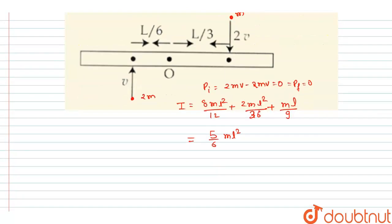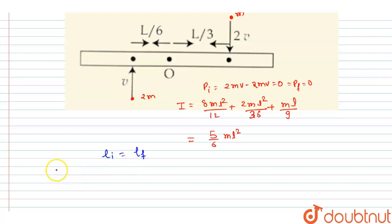Now we conserve angular momentum. Initial angular momentum equals final angular momentum. The initial angular momentum is 2mv × (l/6) plus 2mv × (l/3), which equals 2mvl/2, simplifying to mvl.